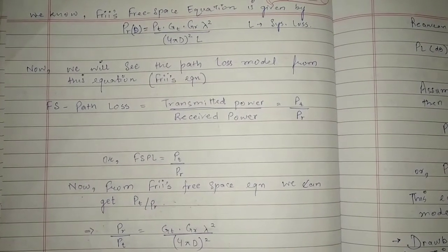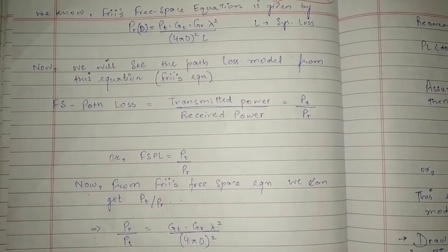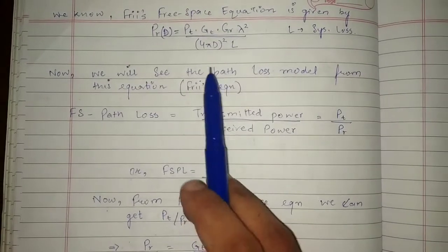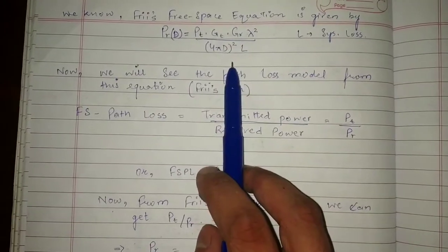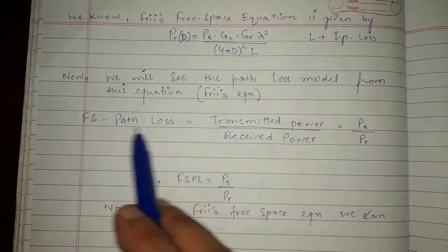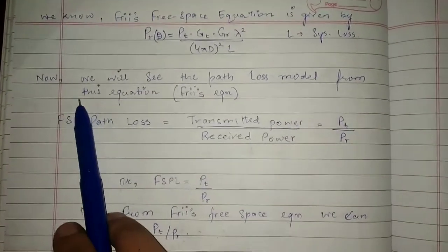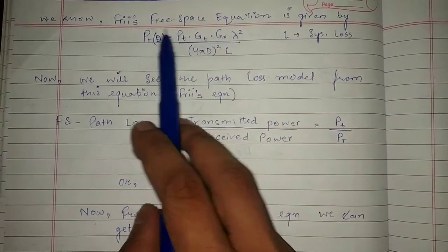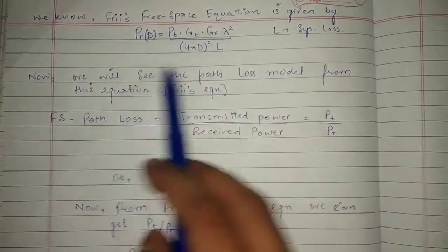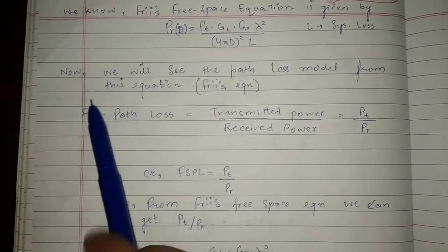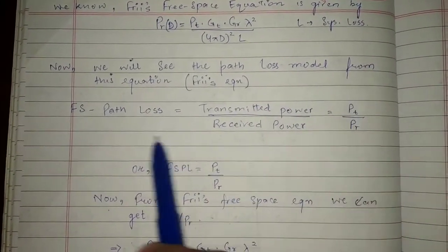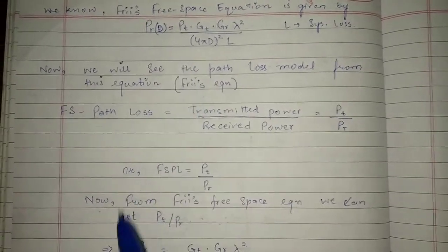Hello and welcome to the mobile and wireless communication playlist. We derived the Friis free space equation — if you have not seen the derivation, please check Part 1 of this video. Now, as we know, the Friis free space equation is given by this equation. We will now see the path loss model derived from this equation.